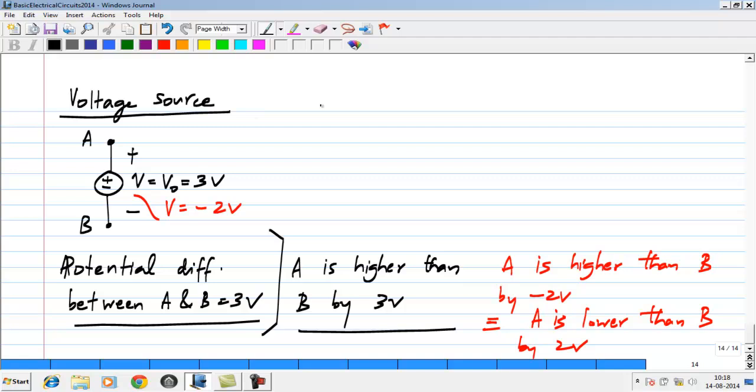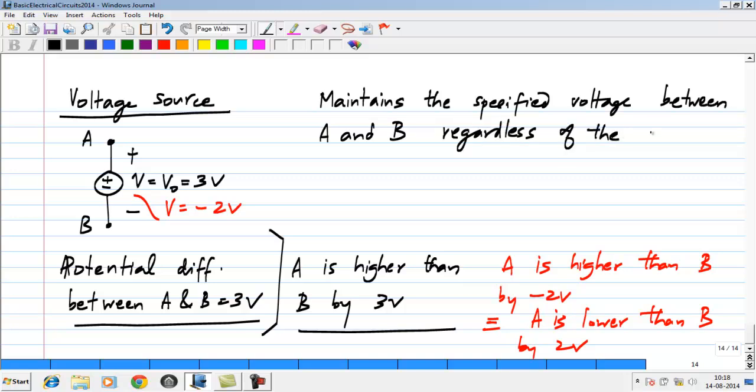And the property of a voltage source is that it maintains the specified voltage between A and B, regardless of the current flowing through it. It does not matter what the value of I is, the voltage between A and B is maintained to be 3 volts or whatever V naught is.